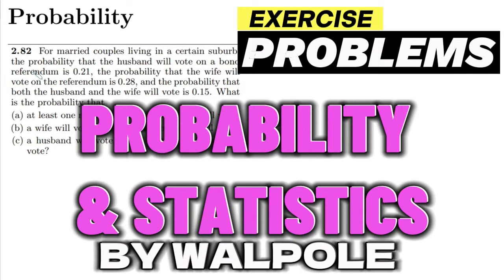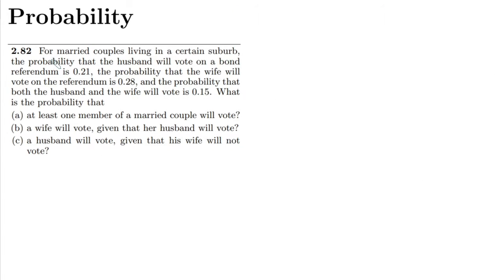Welcome back guys, this is question 2.82. The statement is: for married couples living in a certain suburb, the probability that the husband will vote on a bond referendum is 0.21, the probability that the wife will vote on the referendum is 0.28, and the probability that both the husband and the wife will vote is 0.15. Let me first write this given data.